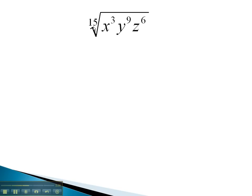In this problem, we have 15, 3, 9, and 6. We can divide them all by 3. 15 divided by 3 gives us a 5th root. 3 divided by 3 gives us x to the 1st. y to the 9 divided by 3 is cubed, and z to the 6th divided by 3 is 2.